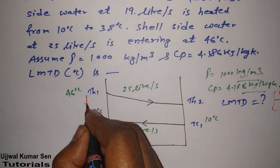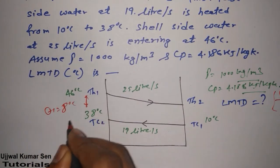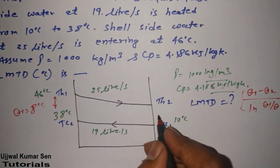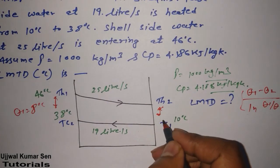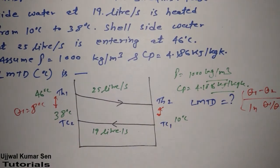Now what is theta 1? Difference between these two. So theta 1 is equal to 8 degree Celsius. But can you find theta 2 from here? No, because we don't know the value of TH2. So first of all what we have to do is find out what is TH2. Then only we can find out theta 2.